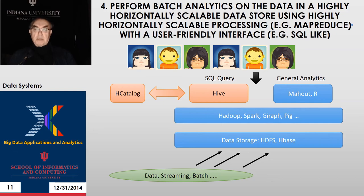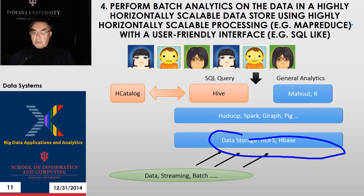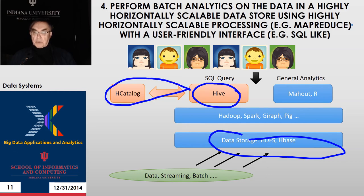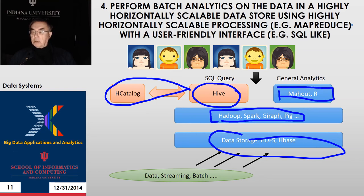Here we're doing analytics on the data directly — the data has somehow gotten into HDFS. We have two types of analysis: Hive, which uses HCatalog to support itself. Hive is SQL on Hadoop, doing classic database processing but using Hadoop to get massively parallel scalability. We can also have Mahout or your favorite parallel algorithm type. So this is a pretty general scenario.